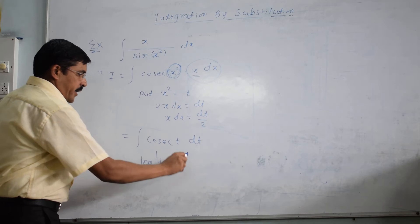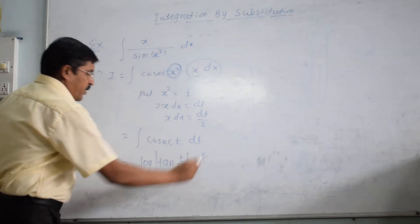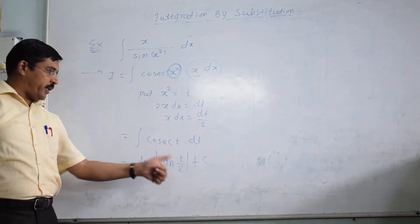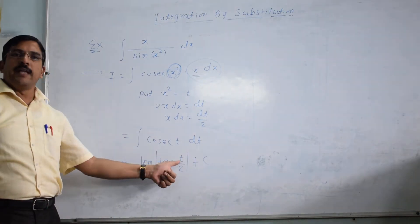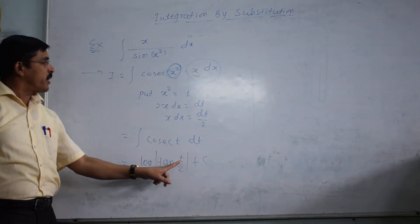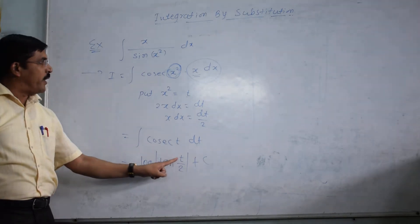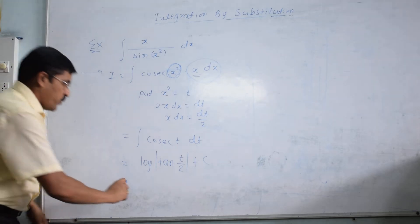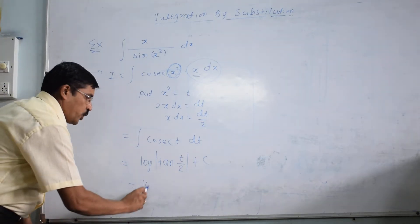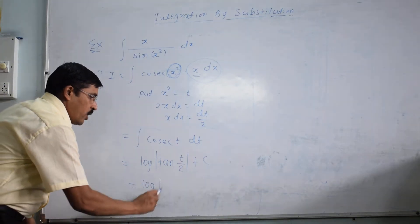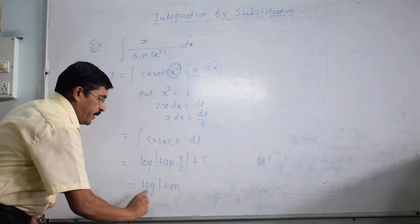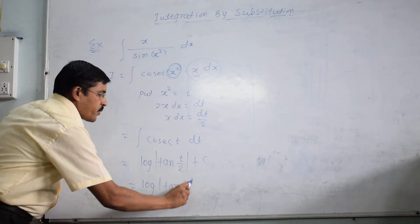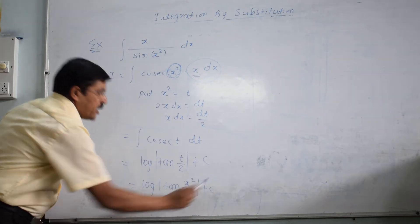We have already studied the formula. Now we get the integral of cosec(t), but we need the answer in terms of x. So we substitute back the value of t. We get log of tan(x²/2). This is the answer.